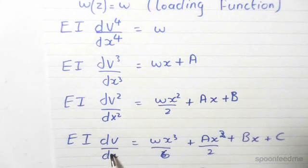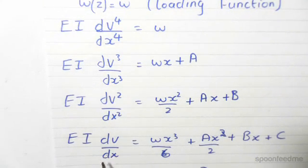Integrating one more time to get the slope of deflection, we find that EI dv/dx is the following equation, and now we have another constant.